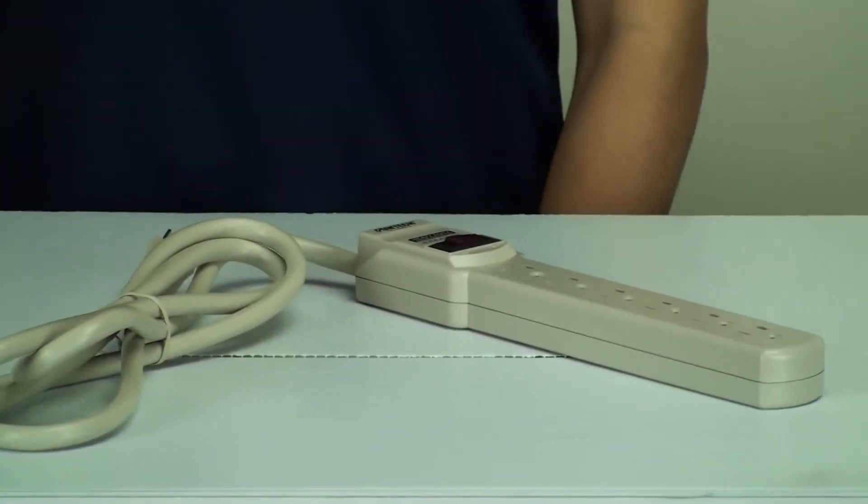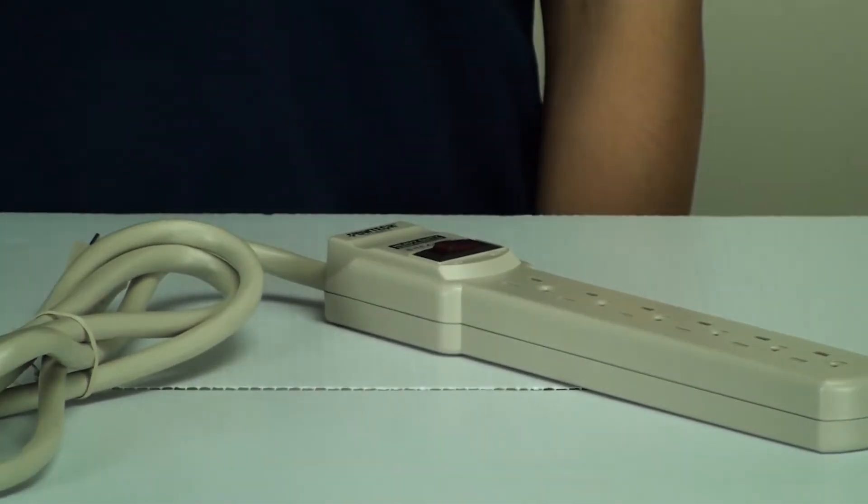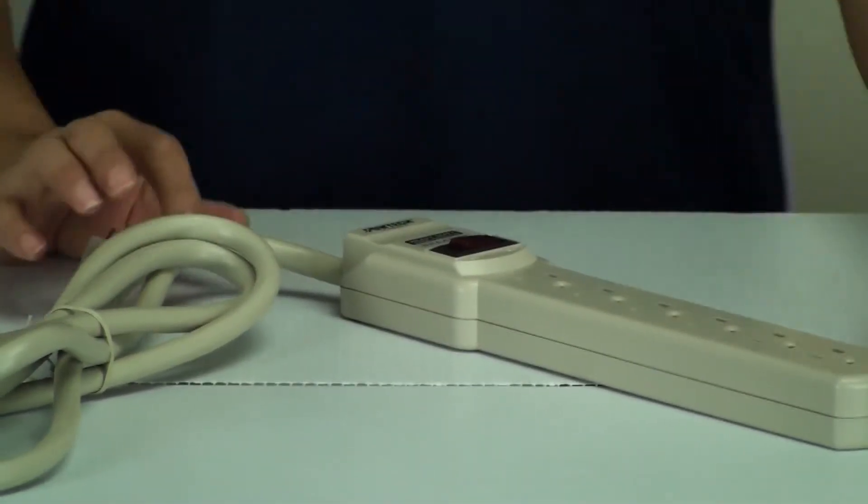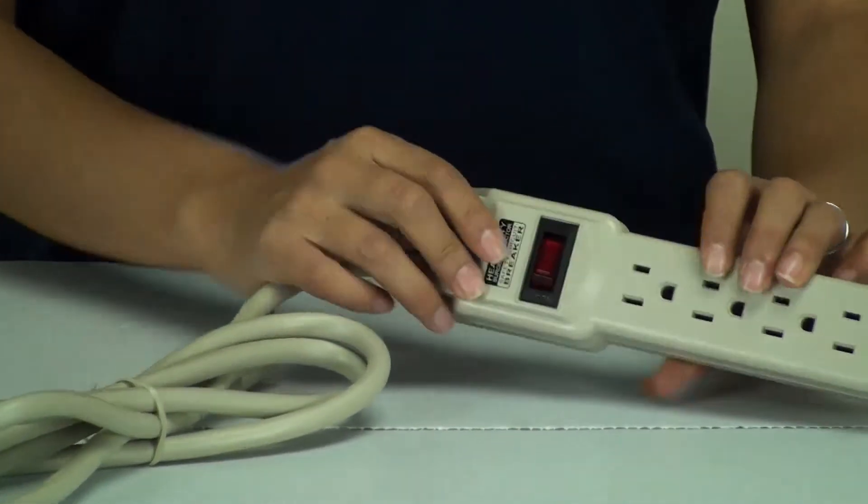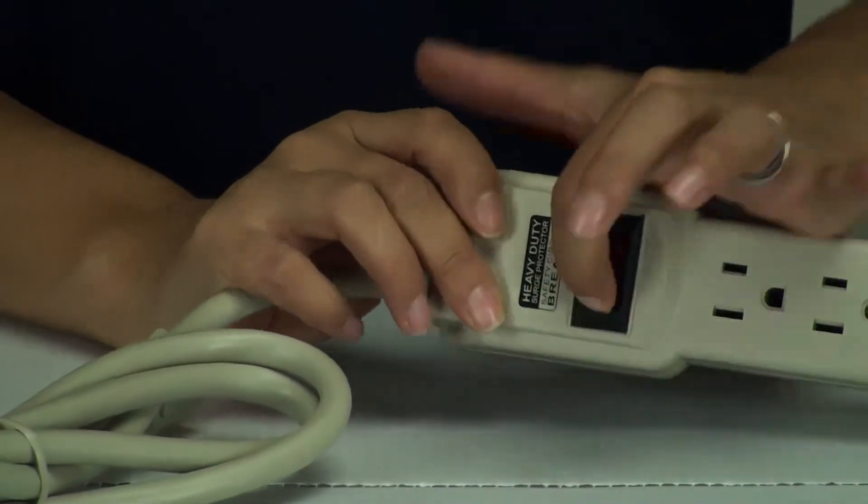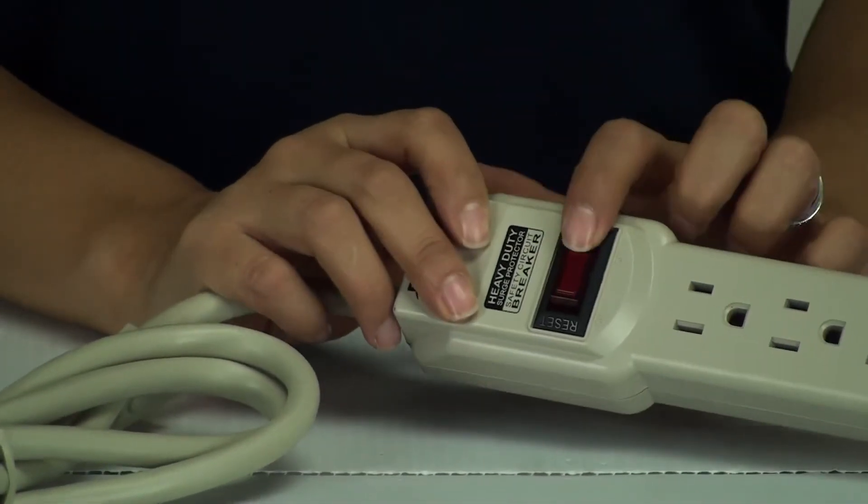Now I want to tell you about the features of this power strip. As you can see, it has 6 outlets and it has a lighted switch so you know when your power is on, the switch will be lit up.